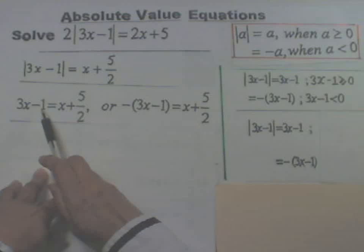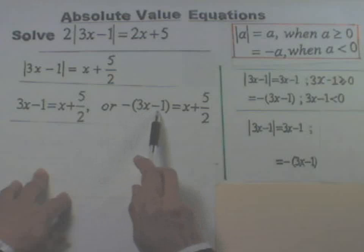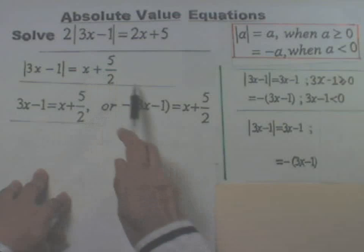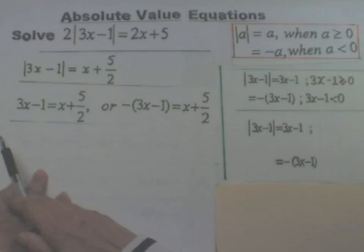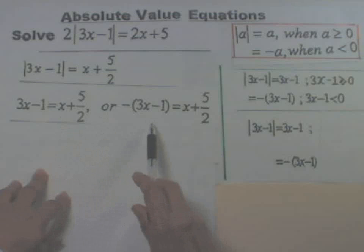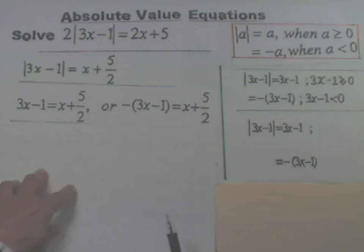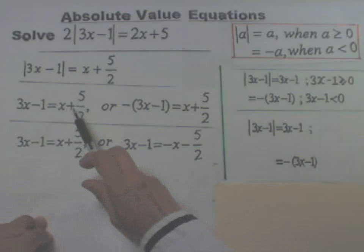This has been rewritten as 3x minus 1, and also as negative of 3x minus 1, keeping the right-hand side as it is. So our absolute value equation has been simplified into two linear equations without any absolute value signs, which you can easily solve. You can rewrite the second equation by multiplying both sides by negative 1.